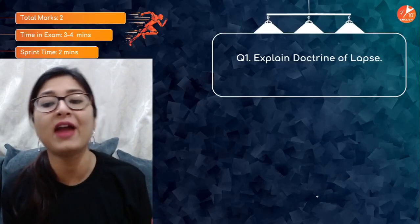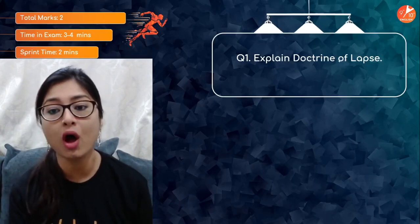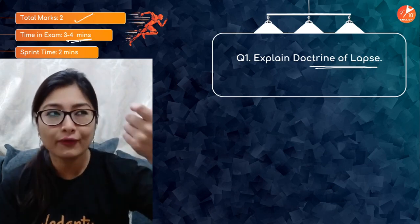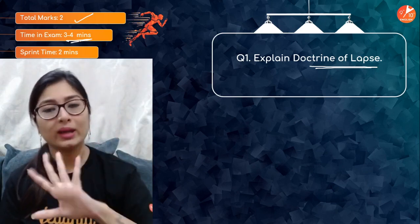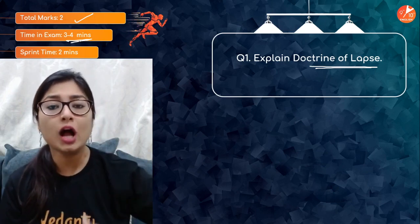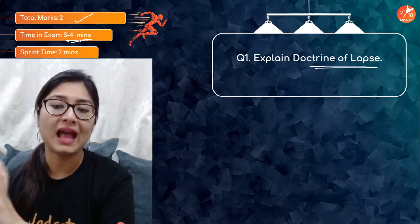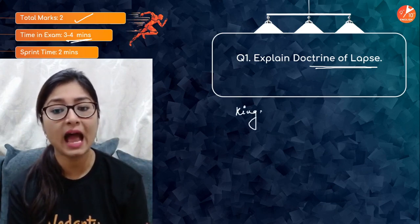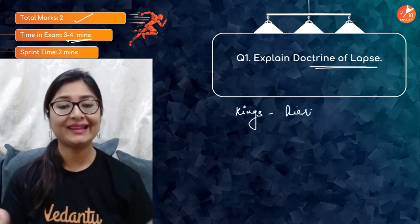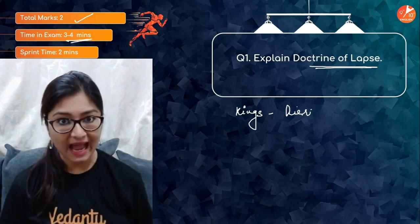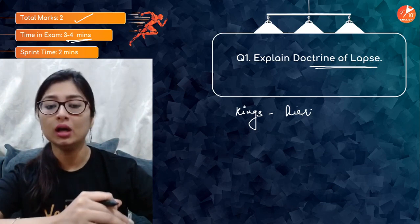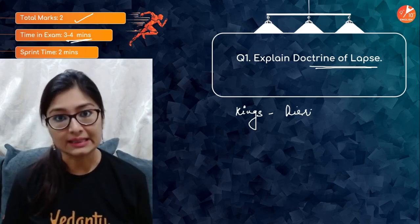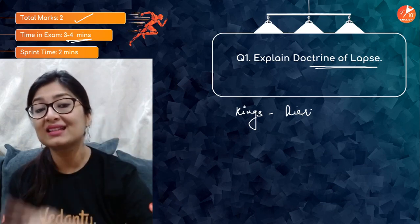Let's get started with the very first question: What was the Doctrine of Lapse? This is normally a two-marker question but we are going to finish it in two minutes. 'Lapse' means to expire. The Doctrine of Lapse was simple — if kings did not have a rightful heir, the whole kingdom would lapse, expire, and get passed on to the British. This was their way of expanding and gaining the territories of Indian kings. In fact, Rani Lakshmi Bai fought against this very doctrine when it was applied to Jhansi.